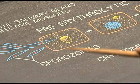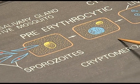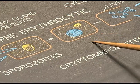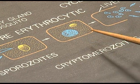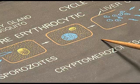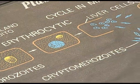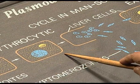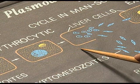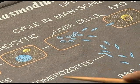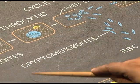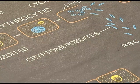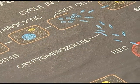From the blood stream, the sporozoites go to the liver. Liver cells are also known as hepatocytes. Inside the liver cells, schizogony takes place. Through schizogony, two types of cryptozoites are formed: one is microcryptomerozoites and another is metacryptozoites.